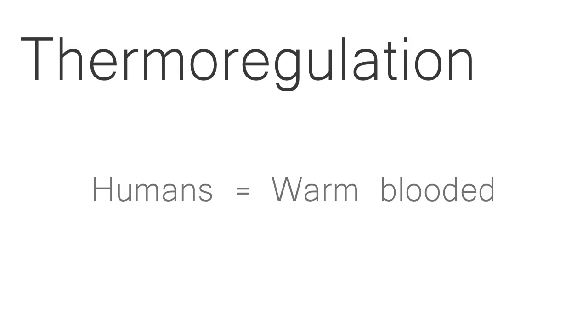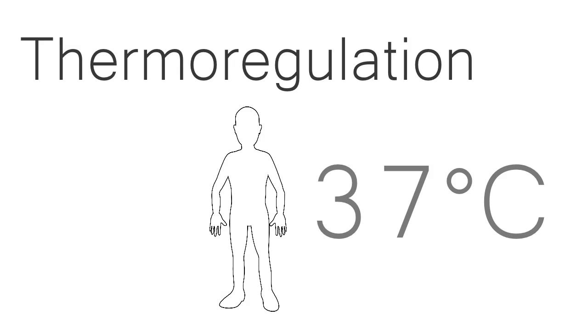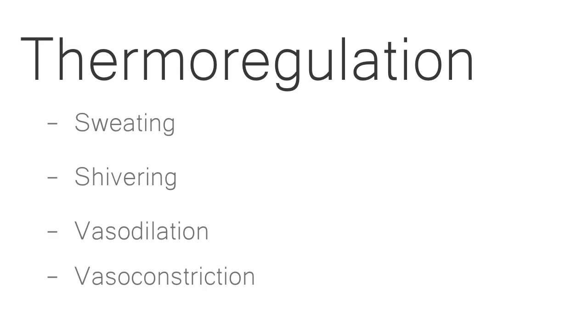But why does vasoconstriction occur? Vasoconstriction is part of a much larger bodily system called thermoregulation. Human beings are warm-blooded organisms, meaning we need to keep our body temperature the same for our body to work. Thermoregulation is the process by which our body maintains its normal body temperature, which is approximately 37 degrees Celsius. It does this through sweating, shivering, vasodilation, and vasoconstriction.